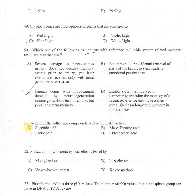Question 51: Which of the following compounds will be optically active? A: oxalic acid, B: meso-tartaric acid, C: lactic acid, D: chloroacetic acid. Option C — lactic acid — is correct, because lactic acid contains a chiral carbon and is therefore optically active.